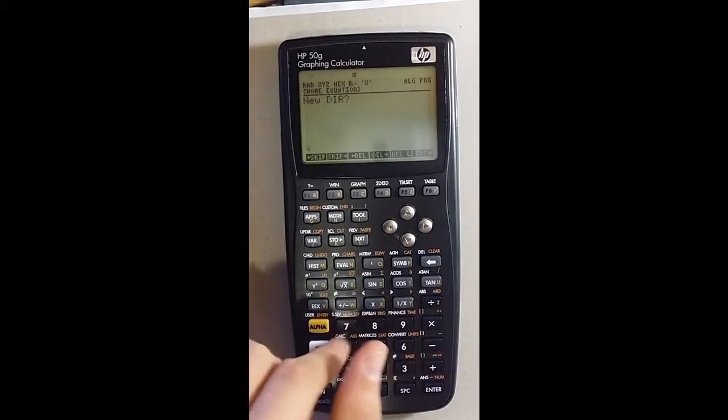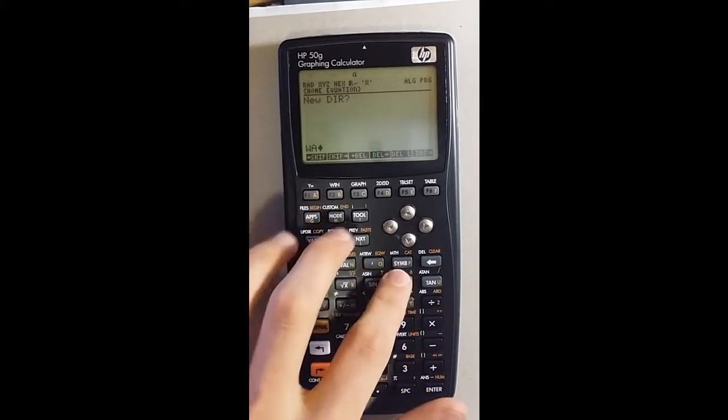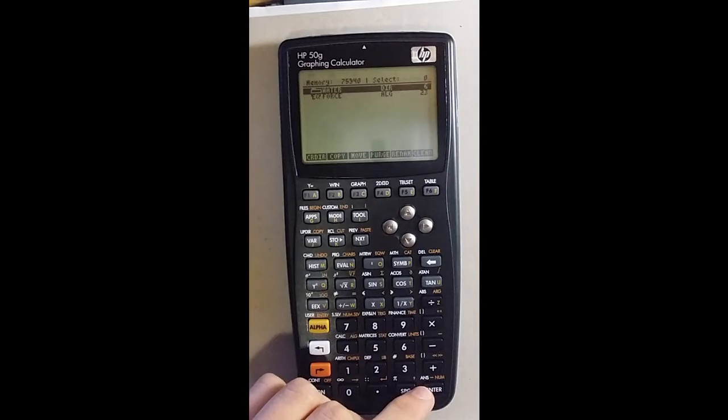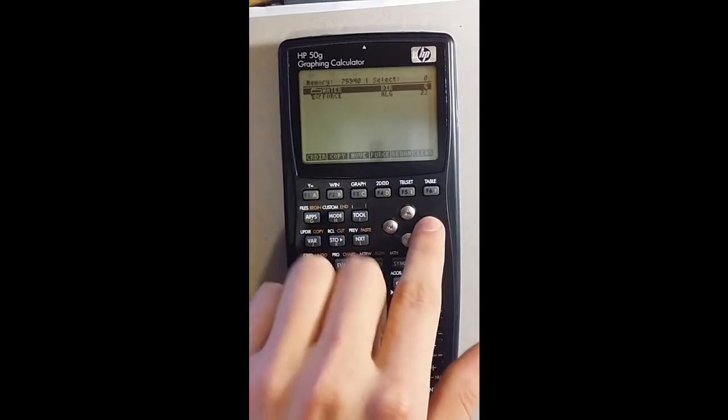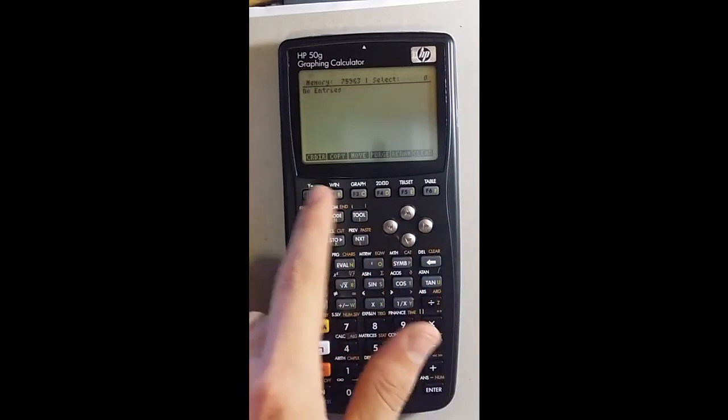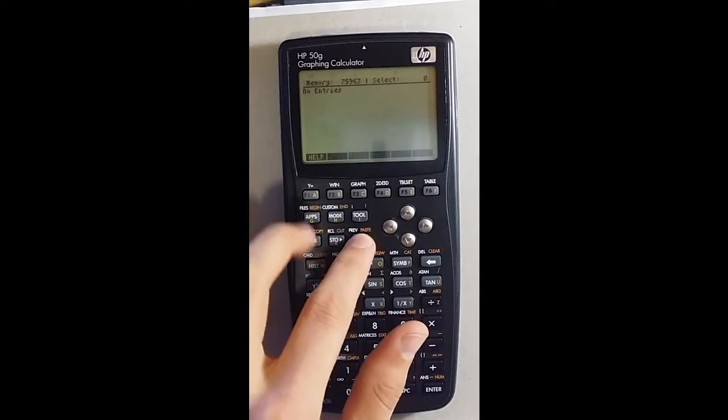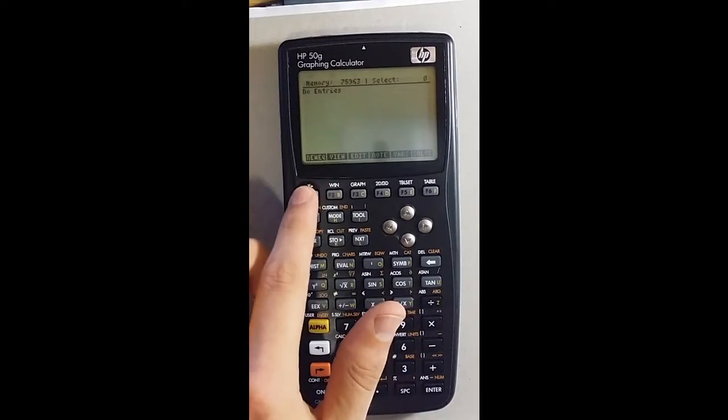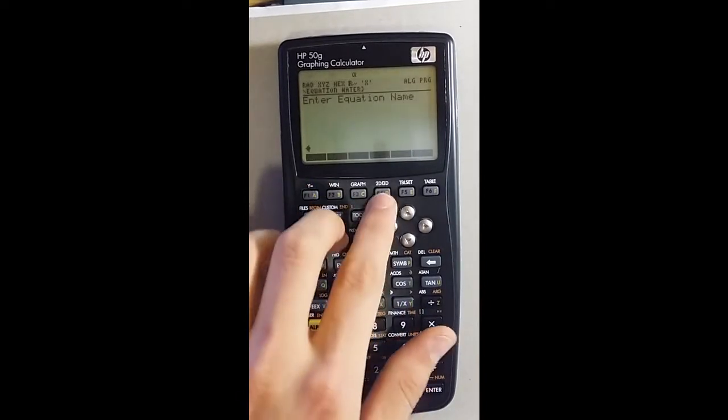When you do that it asks for a name, just say for example water and we access that. It still shows no entries, so you need to add equations. You say new equation, let's name this one start.